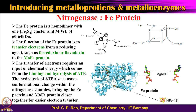The iron protein is essentially a dimer, called gamma-2, having about 60 kilodaltons molecular weight. Its role is electron transfer — it takes electrons from a reduced ferredoxin or flavodoxin and transfers them to the molybdenum iron protein.